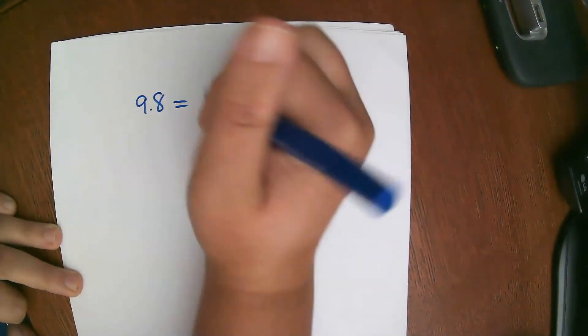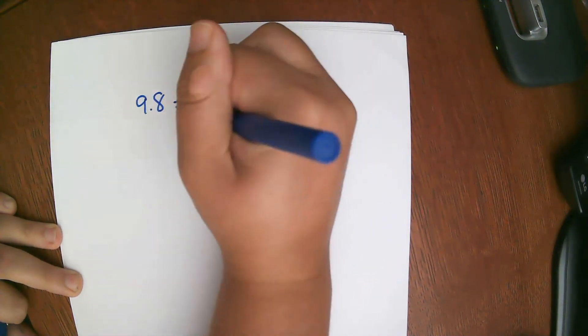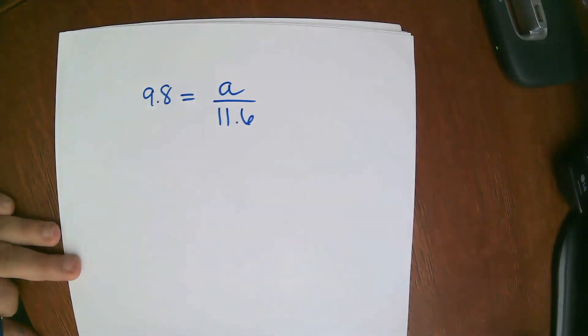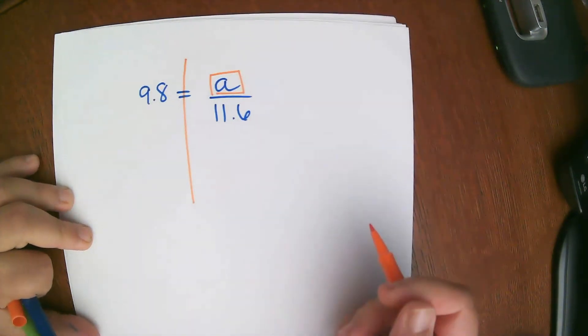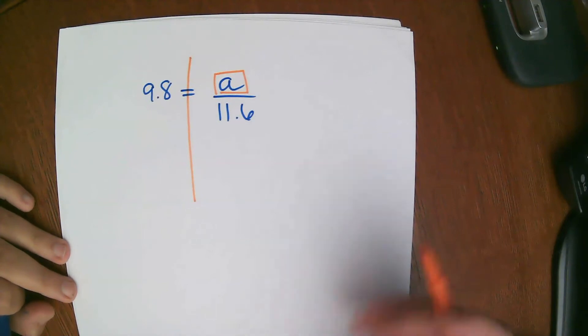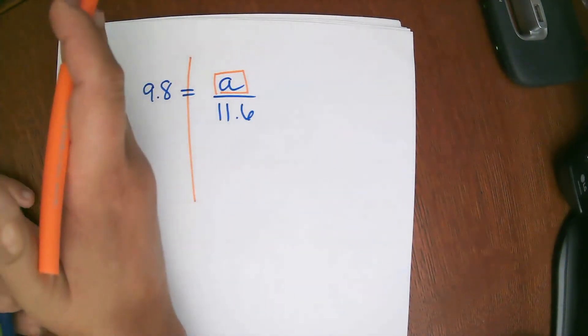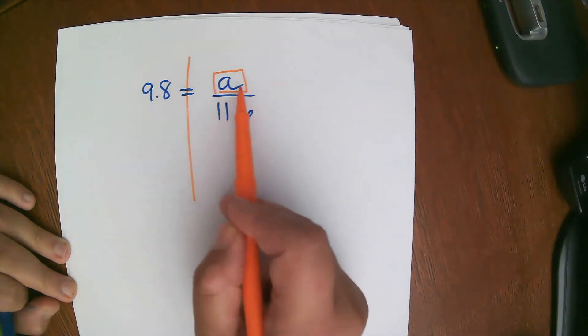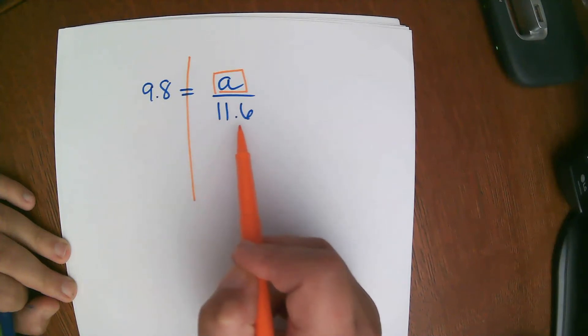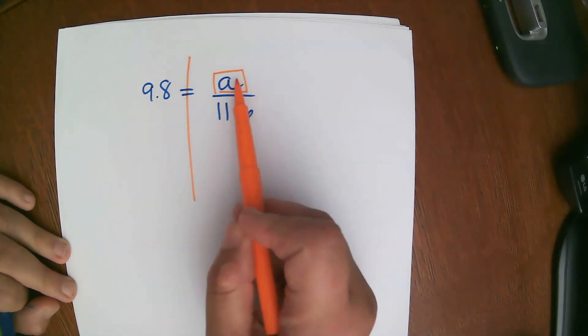So that is one example of a linear equation. Let's look at another example. We have 9 and 8 tenths equals a over 11.6. A little bit different, right? Same method. Draw a box around the variable. Draw your wall. We have our same goal. It doesn't matter if the variable is on this side or this side. It's the same goal. Isolate the variable.